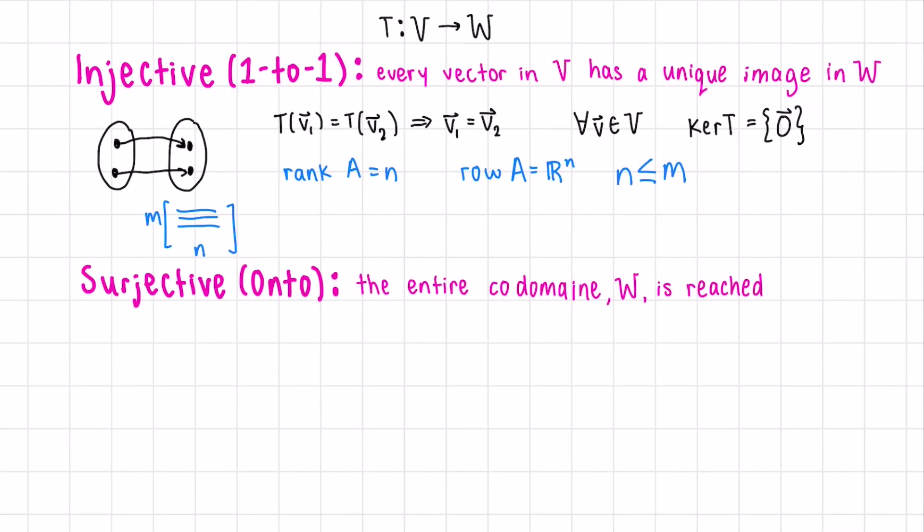Remember that the matrix of our transformation, if it's M by N, will be going from Rn to Rm. This means that the dimension of V, which is N, must be equal to or less than the dimension of W in order for this to be true.